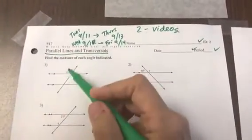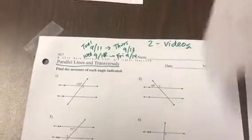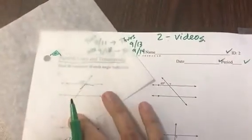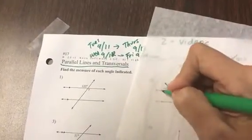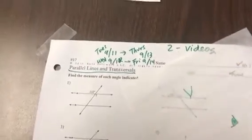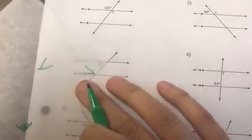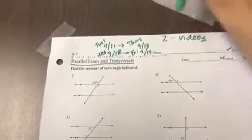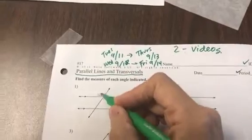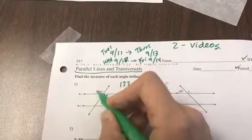And step one, we're going to ask ourselves, would these be equal or supplementary? That's my only choices here. So if I trace this angle, notice it's a perfect match with the question mark. Here, they were equal. 122 has to equal X.